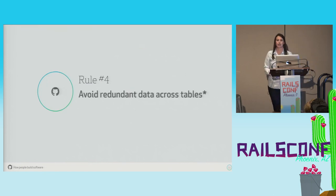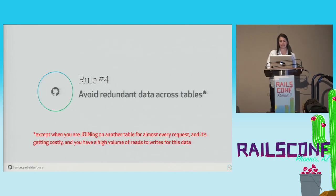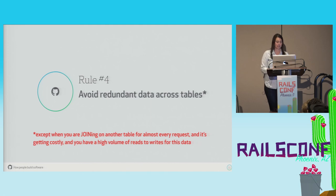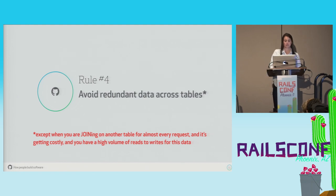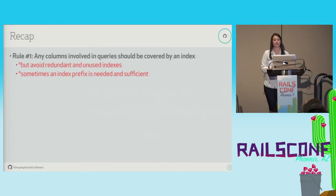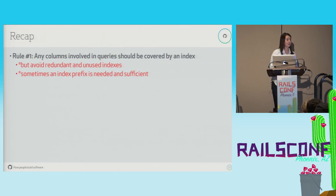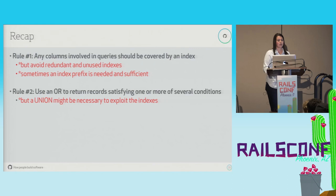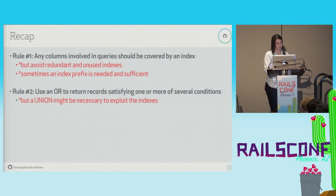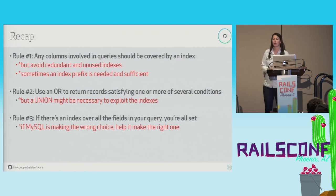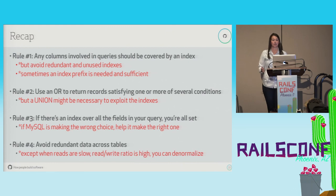So our rule was avoid redundant data across tables — that's generally a good rule, but when you're joining on another table for almost every request and it's getting costly, and you have a high volume of reads to writes for the data in question, it's probably a good idea to consider data denormalization. Recap: Rule 1 — any columns involved in queries should be covered by an index; avoid redundant or unused indexes; sometimes an index prefix is either necessary or good enough. Rule 2 — use an OR to return records satisfying one or more conditions; a UNION might be necessary to exploit the indexes. Rule 3 — if there's an index over all the fields in your query you're all set; if MySQL is making the wrong choice, help it make the right one. Rule 4 — avoid redundant data across tables; except when reads are slow and the read-to-write ratio is high, you can think about denormalizing.